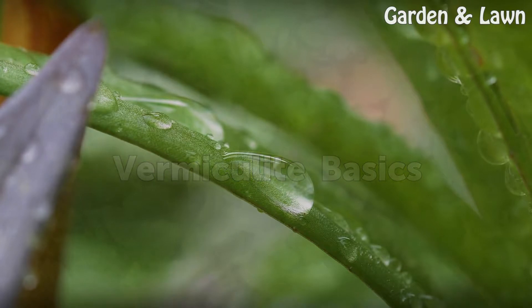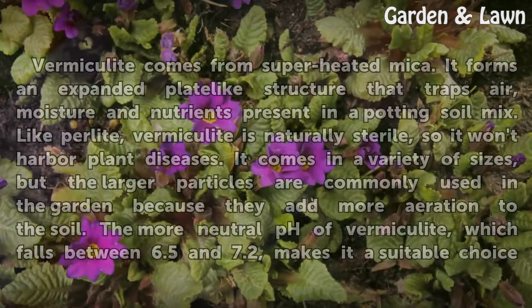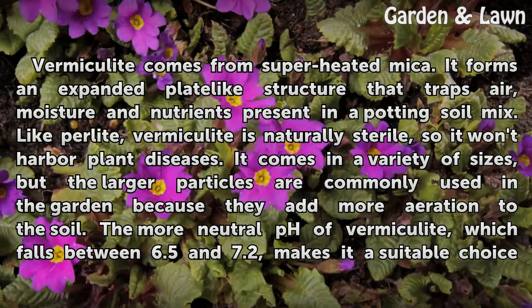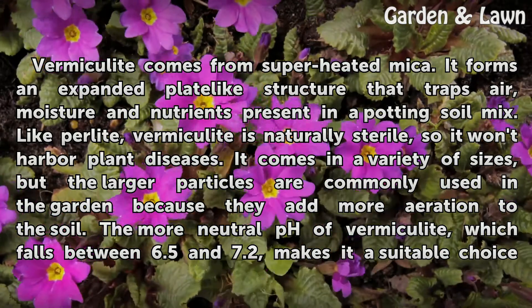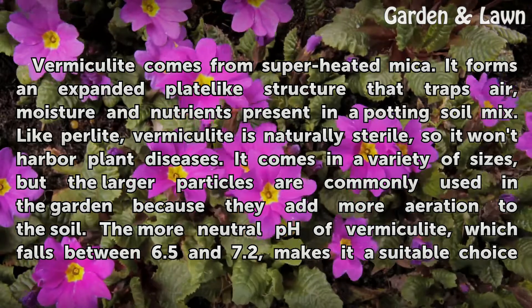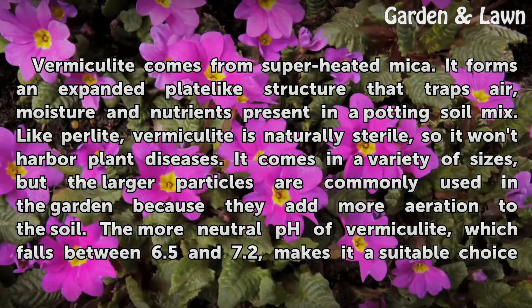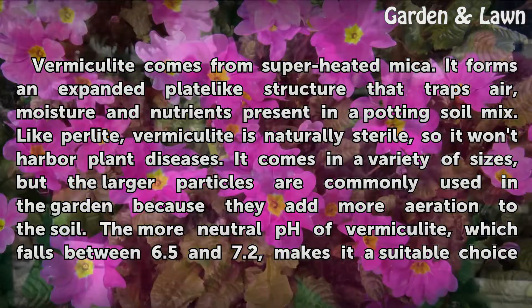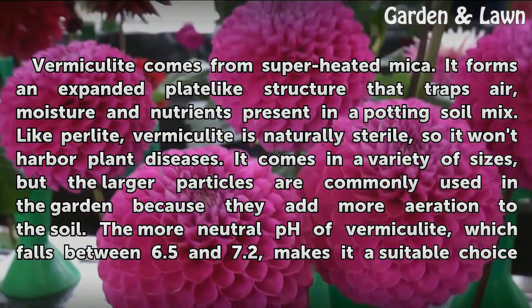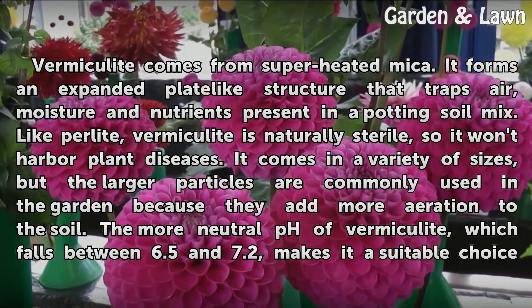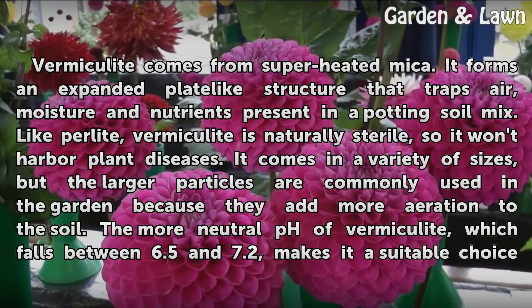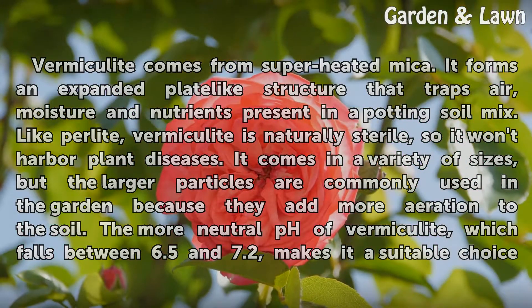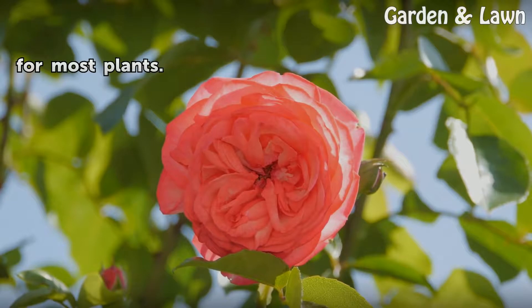Vermiculite basics: vermiculite comes from superheated mica and forms an expanded, plate-like structure that traps air, moisture, and nutrients present in a potting soil mix. Like perlite, vermiculite is naturally sterile, so it won't harbor plant diseases. It comes in a variety of sizes, but the larger particles are commonly used in the garden because they add more aeration to the soil. The more neutral pH of vermiculite, which falls between 6.5 and 7.2, makes it a suitable choice for most plants.